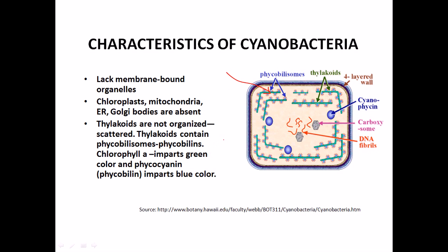These thylakoids not only contain chromogens like chlorophyll, they can also have different types of chromogens. They have phycobilisomes which contain phycobilins and also regions where they store chlorophyll a. The cell looks green in color. They also have phycocyanin, which imparts a blue color inside the cell.